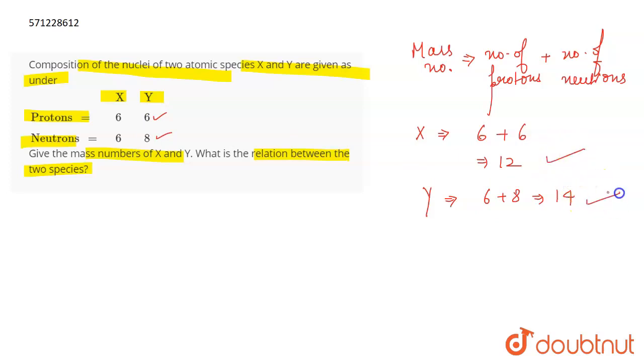The mass number of X is 12 and the mass number of Y is 14. You have to tell the relationship between them. If you look at these atoms X and Y, they have same number of protons.